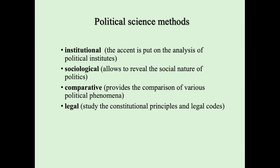The second method is the sociological method. It allows us to reveal the social nature of politics. You know that political science is a social science. The third method is the comparative method. It provides a comparison of various political phenomena. You can use this method while comparing different events which happened in the past with events that happen in the present.